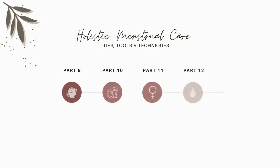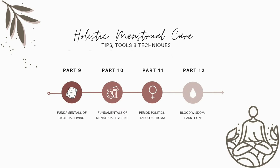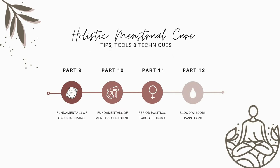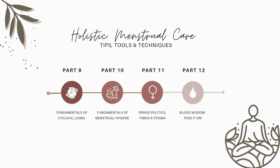In this section I'll be sharing some of the tips, tools, and techniques you can use to help you create a balanced, sustainable, and holistic menstrual care routine. In part 9 we'll cover the fundamentals of cyclical living. Part 10 covers the fundamentals of menstrual hygiene. Part 11 deals with period stigma and taboo. And finally, in part 12 we'll explore the wisdom that comes with an understanding of menstruation and of menstrual blood.